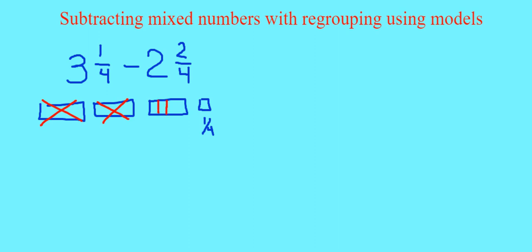To do that, I'm going to split it into 4ths because I need more 4ths. So now I have 5/4 altogether. I can take my 2/4 out — there's 1/4, there's another 4th — and I'm left with 3/4.